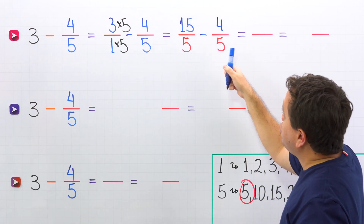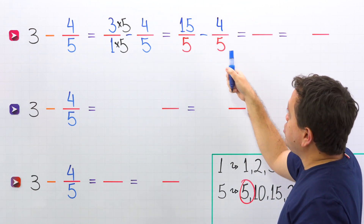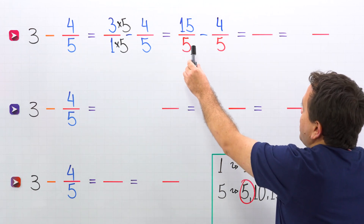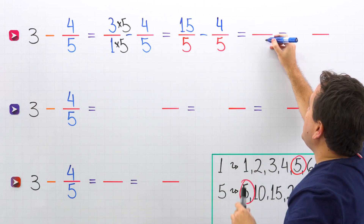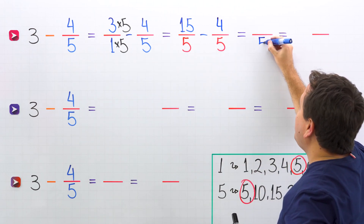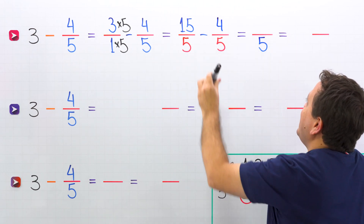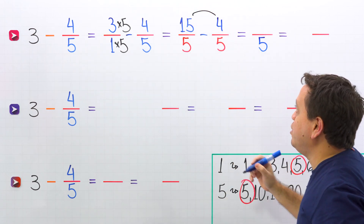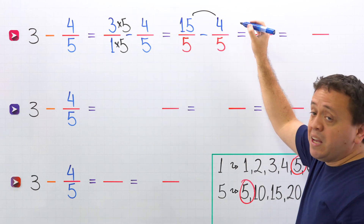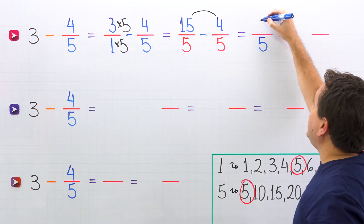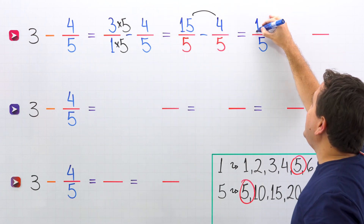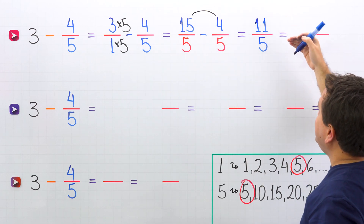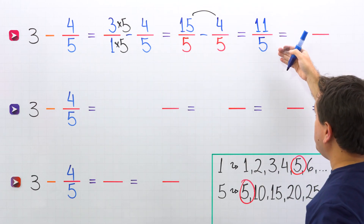Then we subtract these two fractions with the same denominator. We have 5 on the left, 5 on the right. We can put 5 as the denominator and continue by subtracting the numerators. 15 minus 4 gives us 11. The answer is 11 fifths.